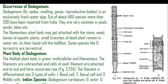The thallus structure of Oedogonium is a long elongated filamentous body which may get attached to stone, wood, or leaves of aquatic plants, and small branches of dead plants remaining in water. All are substrata on which the filamentous body of Oedogonium can be attached, with the help of a basal cell called the holdfast. Some species like Oedogonium terrestris are terrestrial, meaning they are land algae.